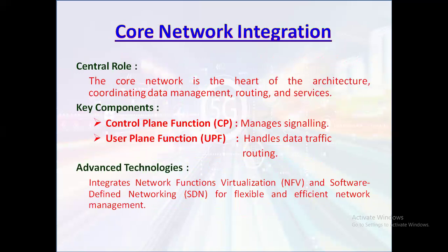The core network serves as the central component of 5G architecture, coordinating essential functions such as data management, routing, and service delivery. Key components include the control plane function (CP), which manages signaling, and the user plane function, which is responsible for routing data traffic.